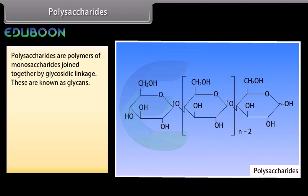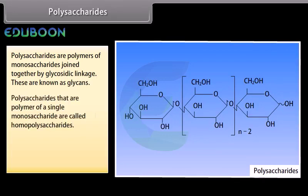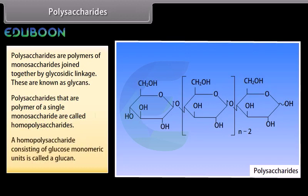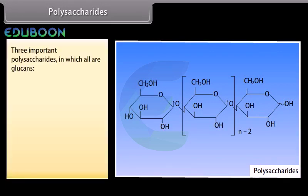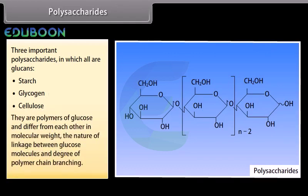Polysaccharides are polymers of monosaccharides joined together by glycosidic linkage. These are known as glycans. Polysaccharides that are polymers of a single monosaccharide are called homopolysaccharides. A homopolysaccharide consisting of glucose monomeric units is called a glucan. Three important polysaccharides, all of which are glucans, are starch, glycogen and cellulose. They are polymers of glucose and differ from each other in molecular weight, the nature of linkage between glucose molecules, and degree of polymer chain branching.